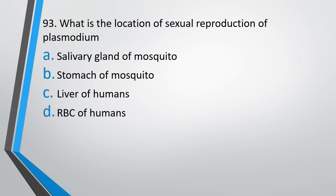Question number 93. What is the location of sexual reproduction of Plasmodium? Options: salivary gland of mosquito, stomach of mosquito, liver of humans, RBC of humans. The site of sexual reproduction — the correct answer is option B, stomach of mosquito.